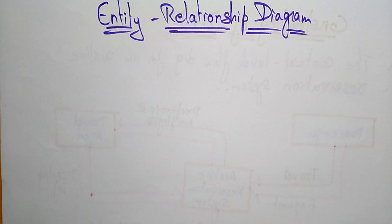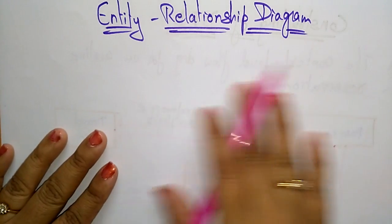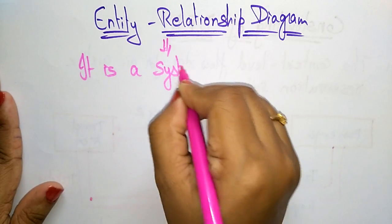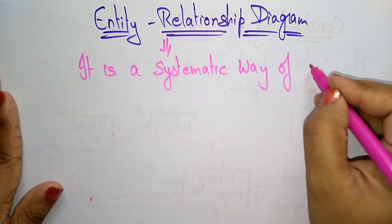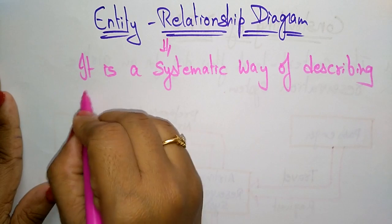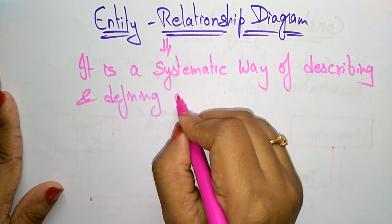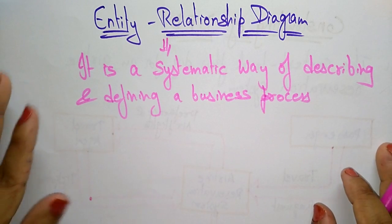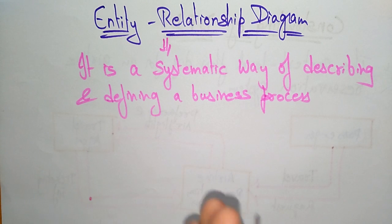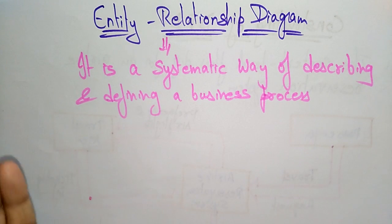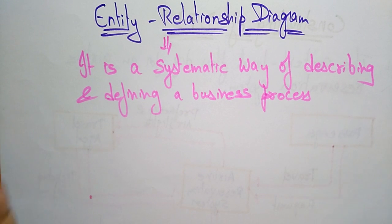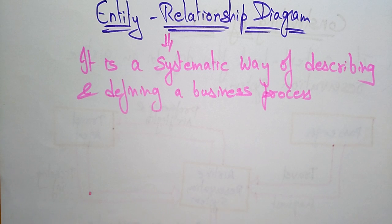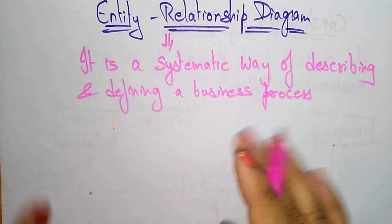Coming to the next topic: the Entity Relationship Diagram, or ER diagram. An ER diagram is a systematic way of describing and defining a business process. The process is modeled as component entities that are linked with each other by relationships that express the dependency and requirements between them. Different entities — different persons — and the communication between those persons can be represented using an ER diagram.